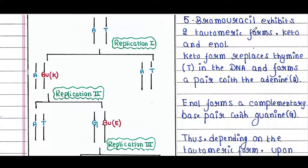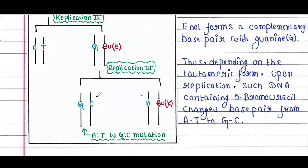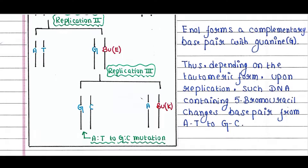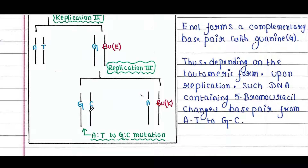5-bromouracil exhibits two tautomeric forms: keto and enol. The keto form replaces thymine in DNA and forms a pair with adenine. The enol form forms a complementary base pair with guanine. As a result, the AT base pair gets changed into a GC base pair. Thus, depending on the tautomeric form upon replication, DNA containing 5-bromouracil changes its base pair from AT to GC.